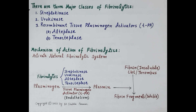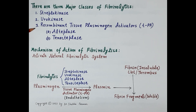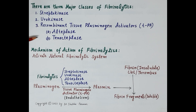There are three main classes of fibrinolytics. The first class consists of streptokinase. The second class consists of urokinase. The third class consists of recombinant tissue plasminogen activators, which includes fibrinolytics like alteplase and tenicteplase.